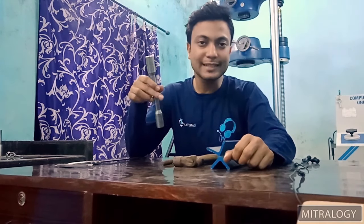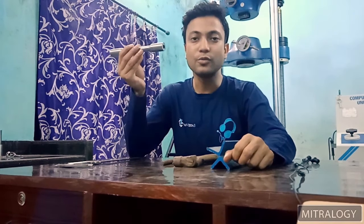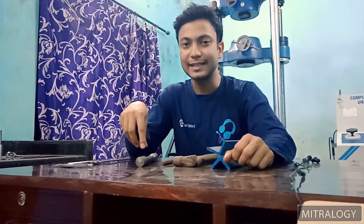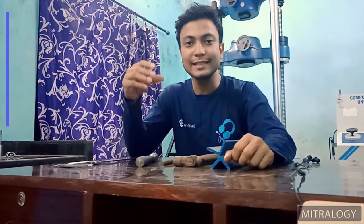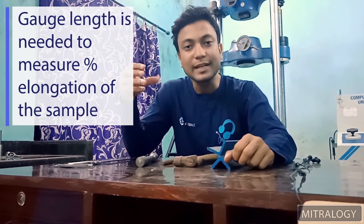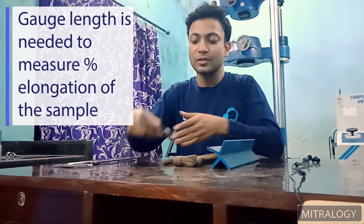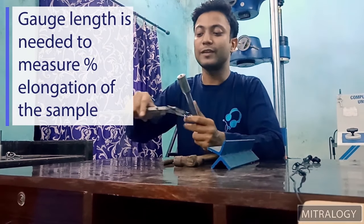Before starting the test, we have to measure the gauge length. Basically we measure gauge length to determine the percentage elongation of the material. So at first we are measuring the diameter of this round solid.